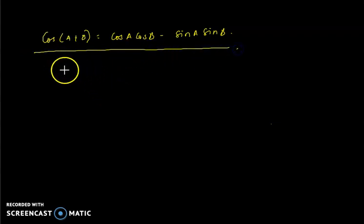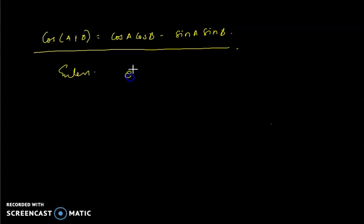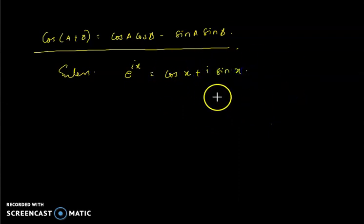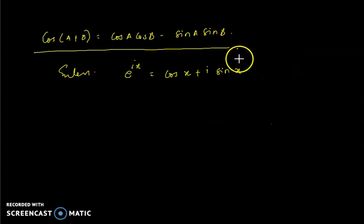I'm going to use Euler's formula, which connects a complex number with trigonometric form. Euler states that e^(ix) = cos x + i sin x. This is the way Euler expressed a complex number using trigonometric functions.